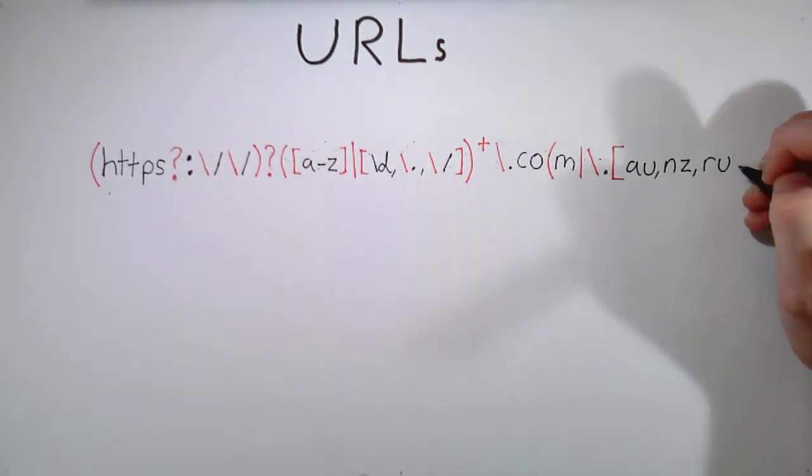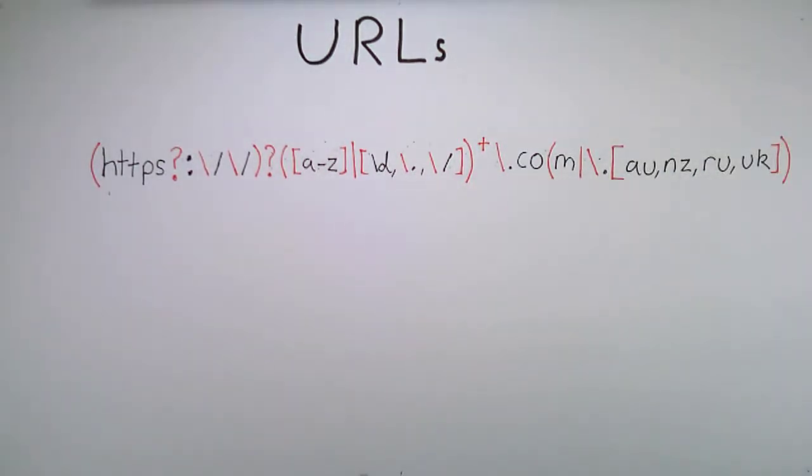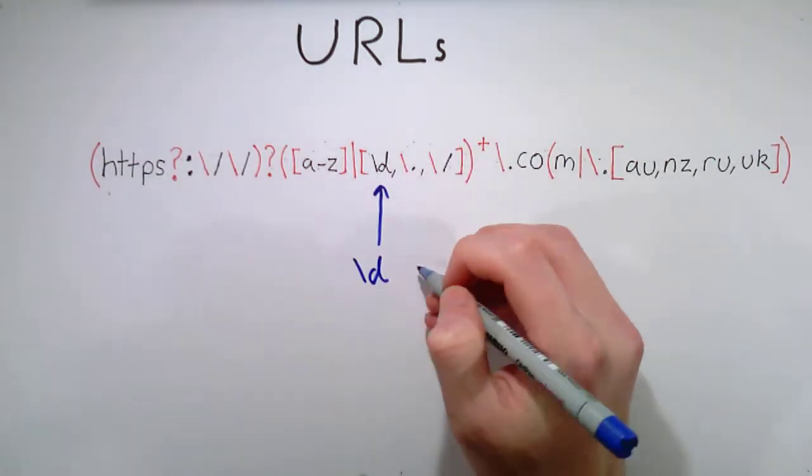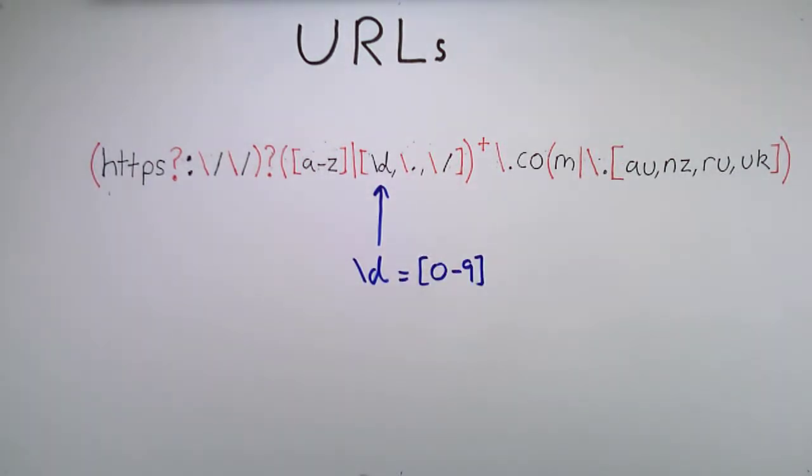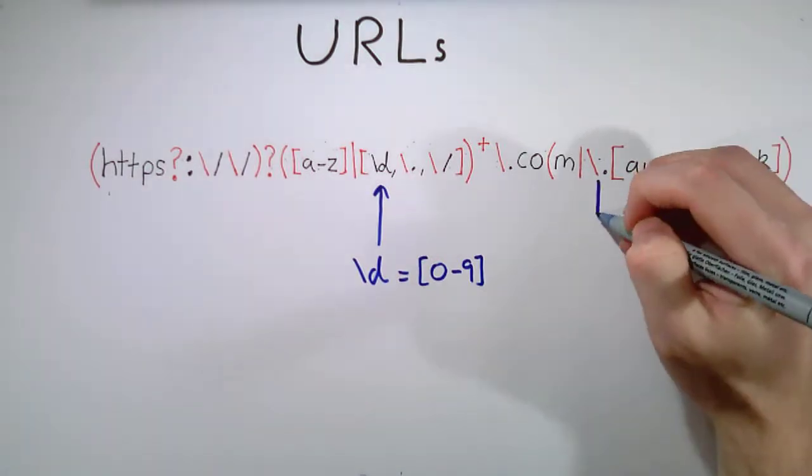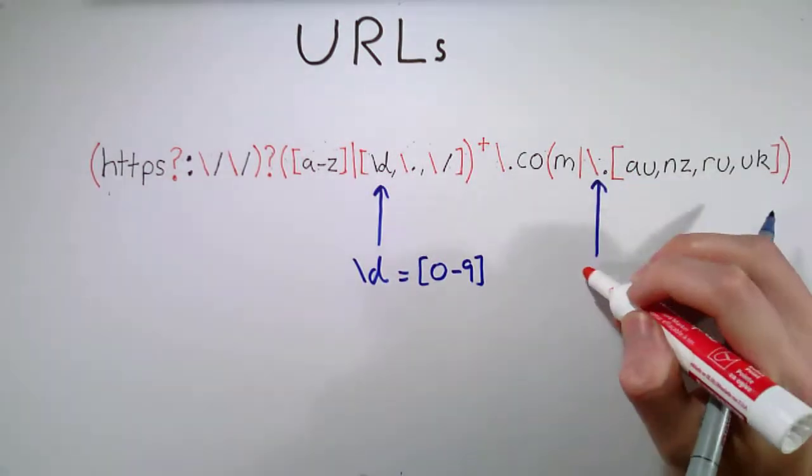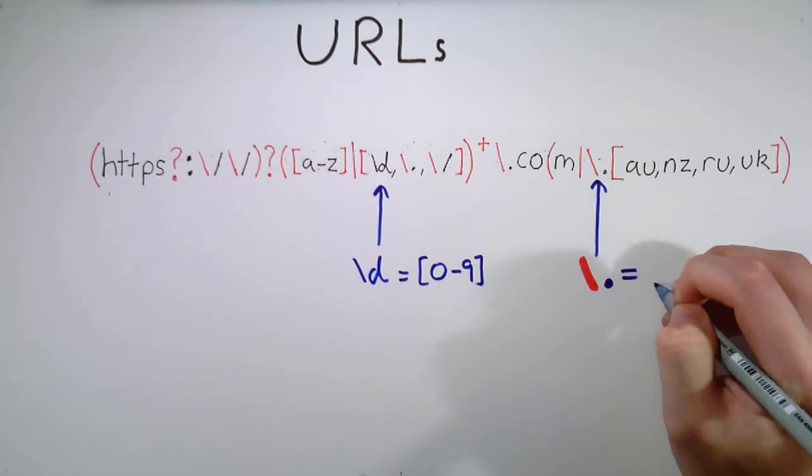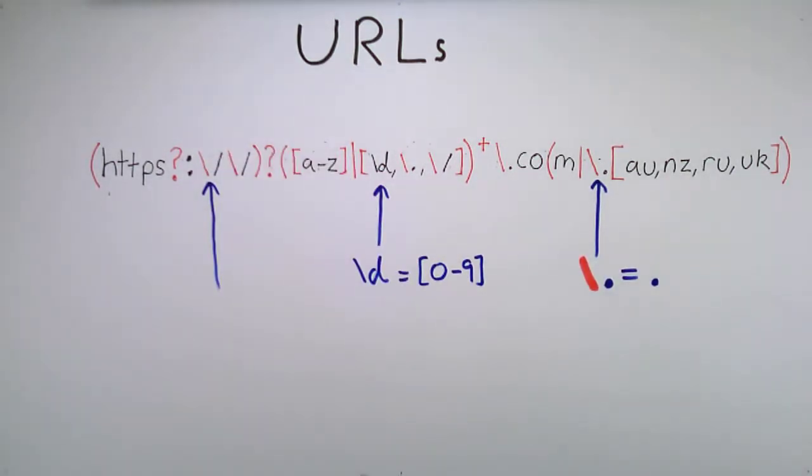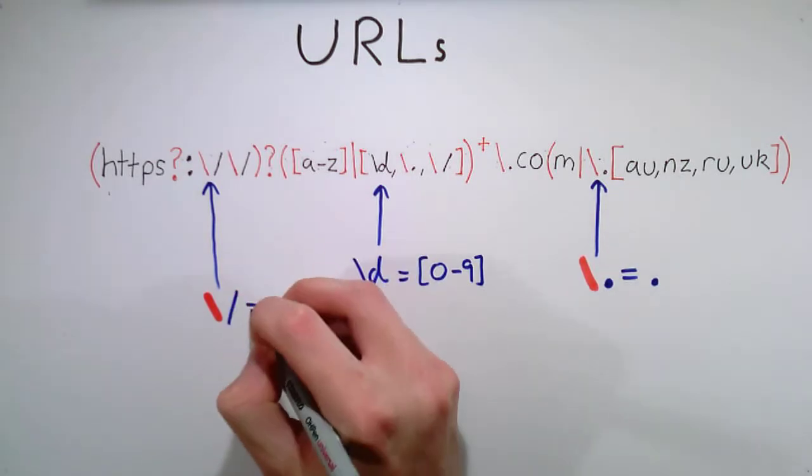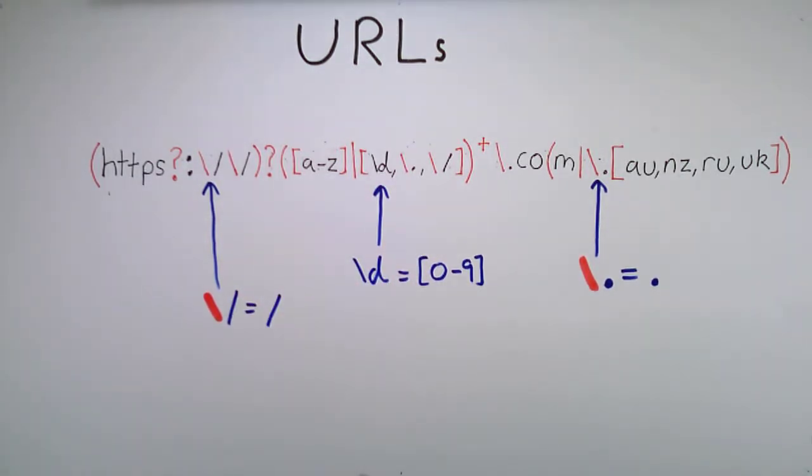Before we do though, we need to make one more clarification. Apart from some cases, such as backslash d, the backslash is used as an escape character, and so the following symbol is matched as is. We found before that the period matches any single character, but backslash period matches the period itself. This is the same for backslash forward slash, as forward slash normally matches the division symbol.